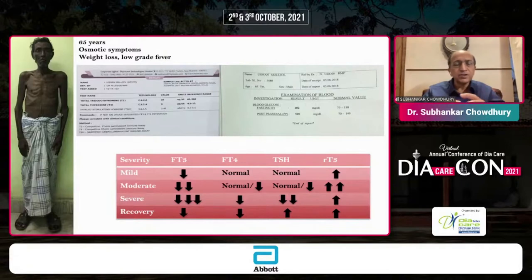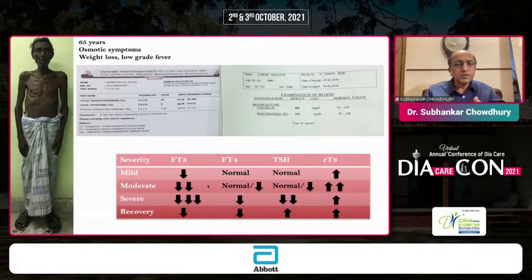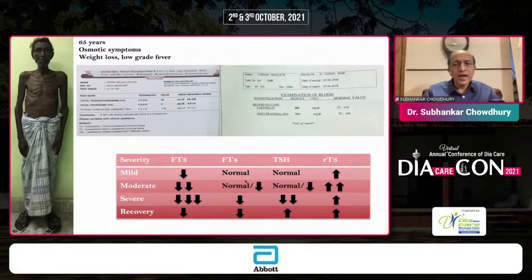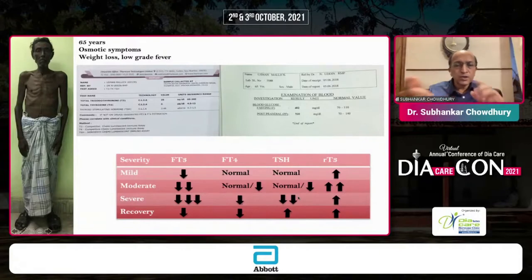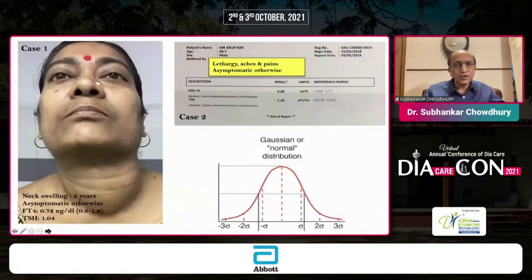There can be different stages of sick euthyroid syndrome, all related to the severity of the underlying illness. In mild illness, the only change may be lowering of T3 or free T3. For moderate illness, both free T3 and T4 could be low. In severe illness of some duration, all three — T3, T4, and TSH — can be low. In the recovery phase, there can be a period where T3 and T4 are still low but TSH is recovering and has gone beyond the normal range. We should be aware of this. Just because T4 is low, one does not need to start thyroxine.